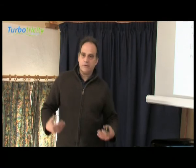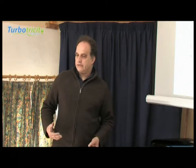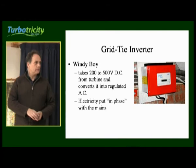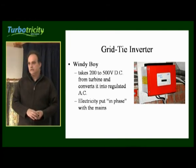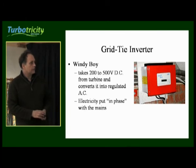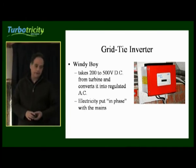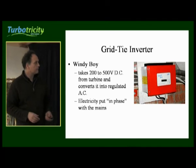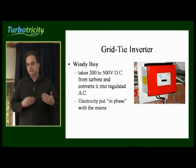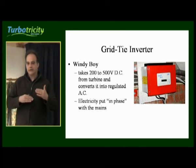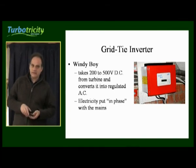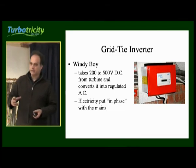Assuming you're not going for a battery system and you're going for a grid-tie system, you'll need a grid-tie inverter. The popular ones on the market are the SMA Windy Boy and Sunny Boy, and also the Aurora ones that we use here. The Windy Boy can take any voltage from your turbine between 200 and 500 volts DC and converts it into regulated AC that is absolutely in phase with the grid.